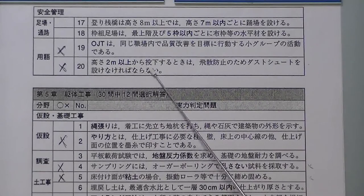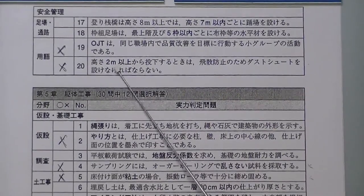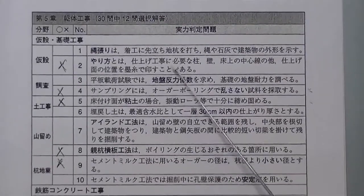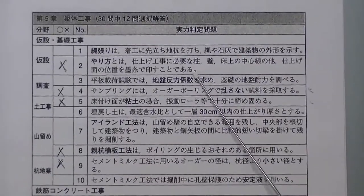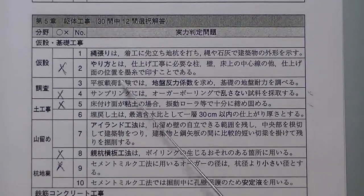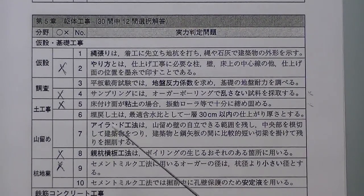高さ2メートル以上から投下するときは飛散防止措置をするとありますが、これは3メートル以上から投下するときです。仮設のところで、やり方とは仕上げ工事に必要な柱・壁・中心線のほか、仕上げの位置を墨糸で示すことであるとありますが、これは墨出しのことです。やり方ではありません。